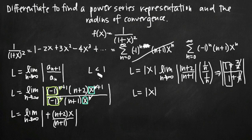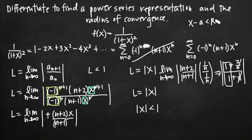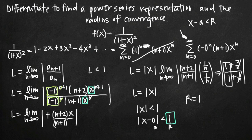We have l equals the absolute value of x, and the series converges when l is less than 1, so the series converges when the absolute value of x is less than 1. For radius of convergence, we look for the form absolute value of x minus a less than R. Here we have x minus 0 less than 1, so a equals 0 and R equals 1. The radius of convergence is R equals 1. That's how you use differentiation to find the power series representation and its associated radius of convergence.